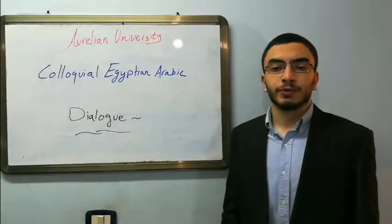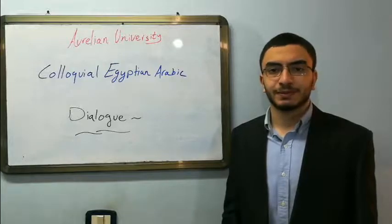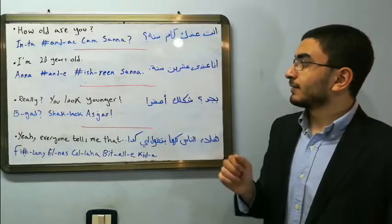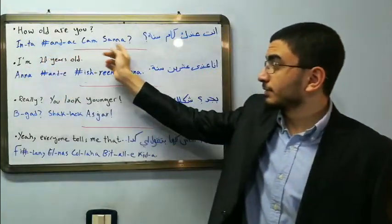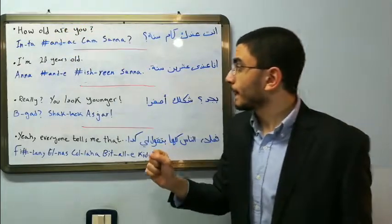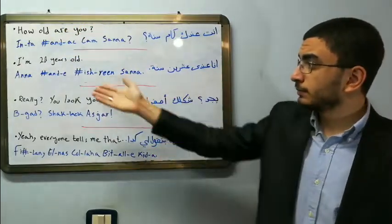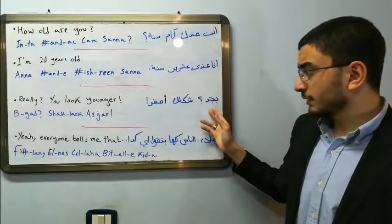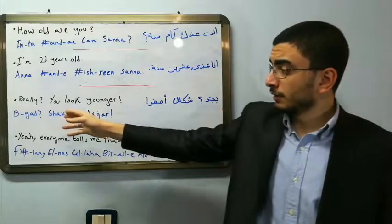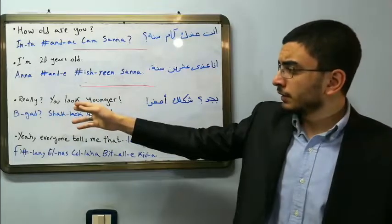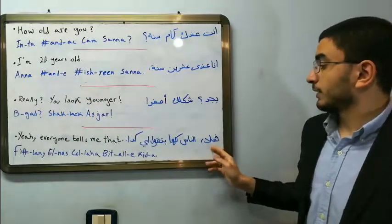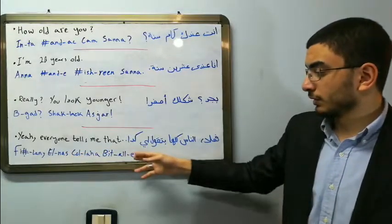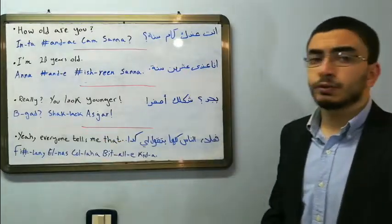Now we're going to go over the phrases again but this time with the Arabic coming first. How old are you? I'm 20 years old. أنا عمري عشرين سنة. Really? You look younger. بجد شكلك أزر. فعلا الناس كلها بتقول لي كده. Yeah, everyone tells me that.